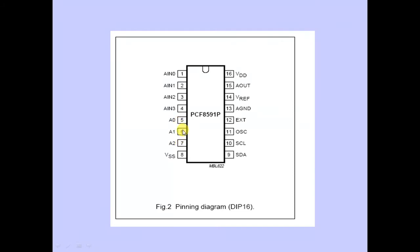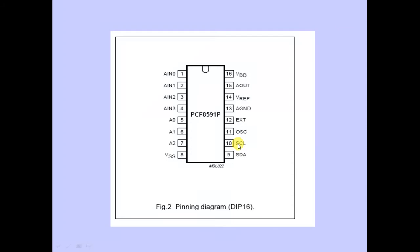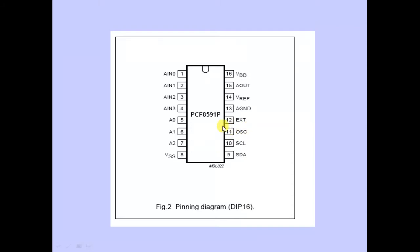Pins 5, 6, and 7 are the three hardware address lines, which decide the slave address of the ADC or DAC device. Pin 8 is the device ground. Pins 9 and 10 are the I2C communication lines: SDA (serial data line) and SCL (serial clock line). Pins 11 and 12 are oscillator input and output, which allow an external clock, but the PCF8591 has an internal oscillator so these are not required.